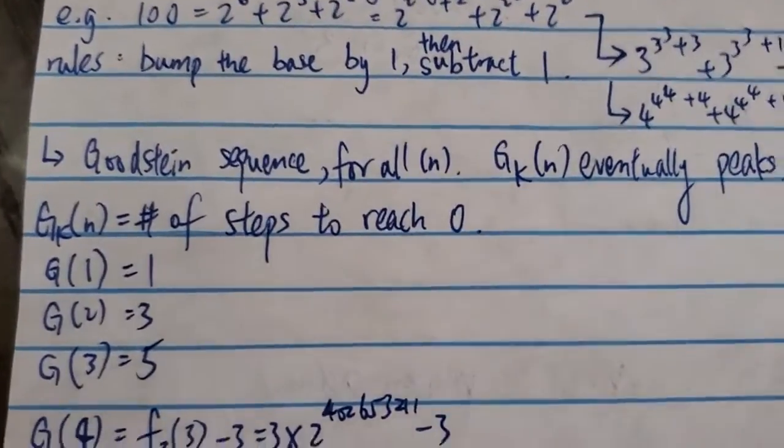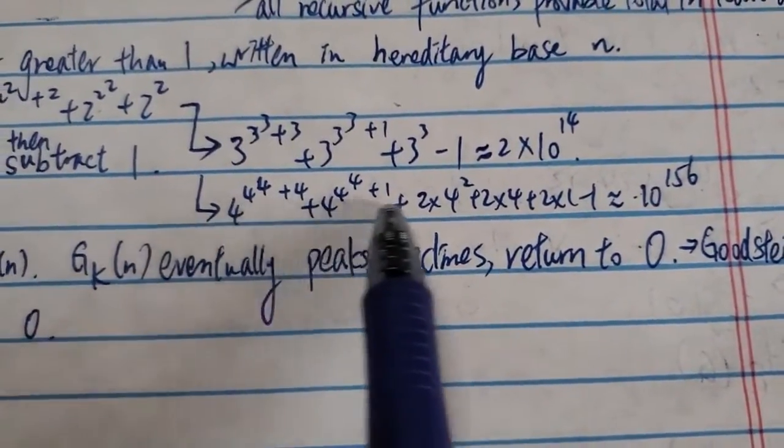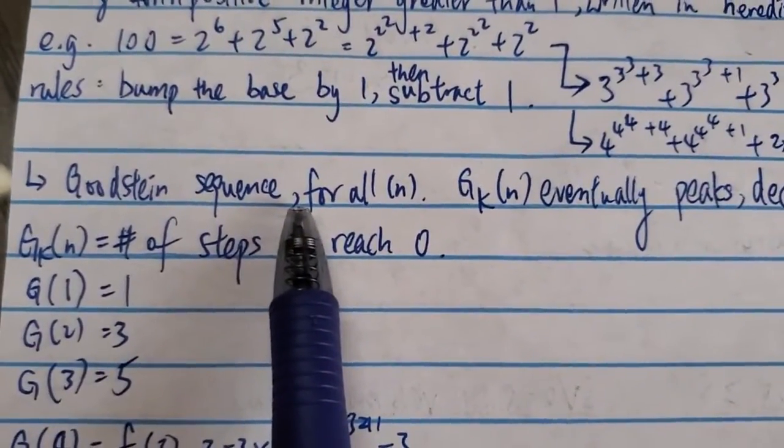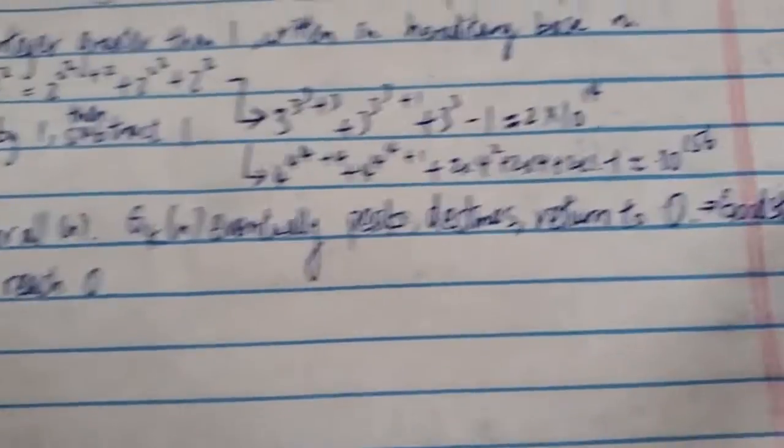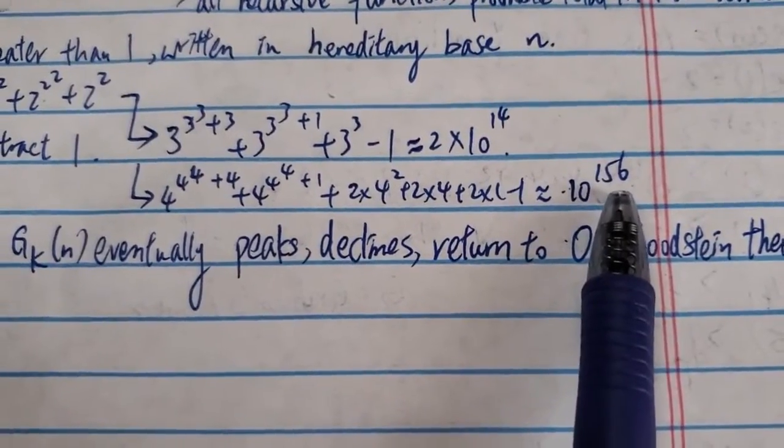And what about the Goodstein sequence? So for the Goodstein sequence, it's not about the number you get here. It's not the answer for this sequence. It is actually how many steps this sequence is going to reach zero, which is kind of ridiculous or doesn't make sense.